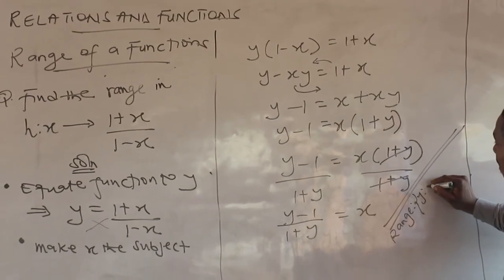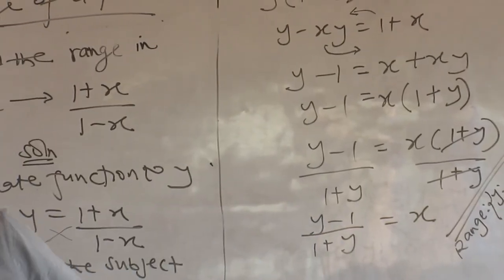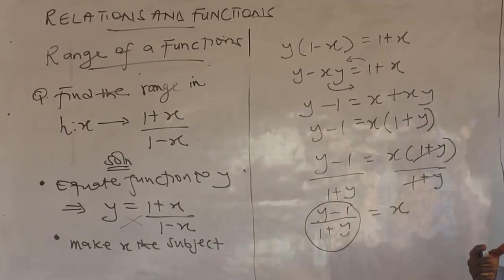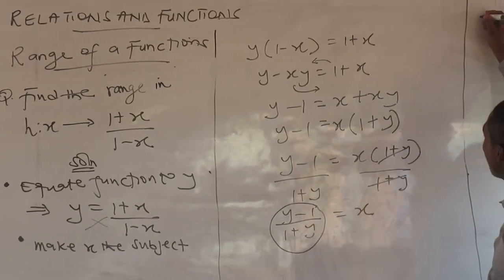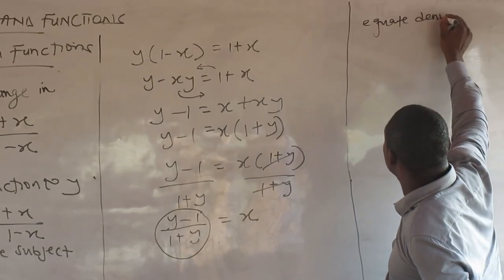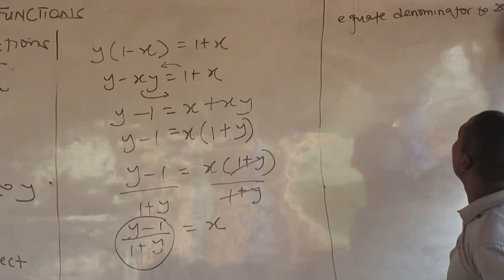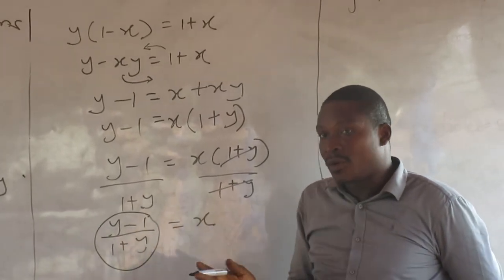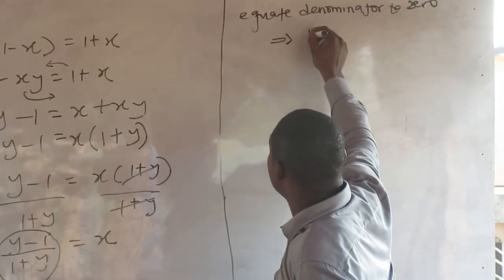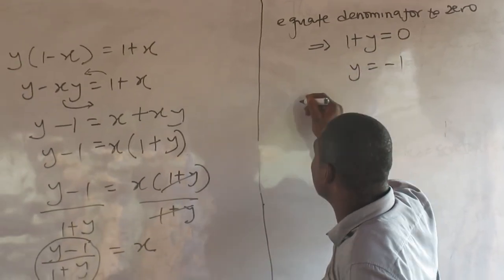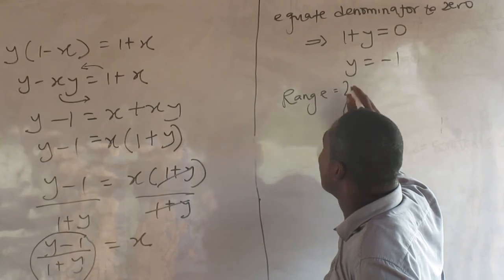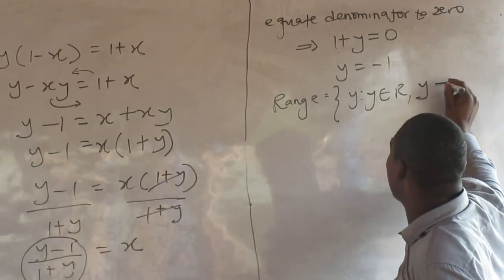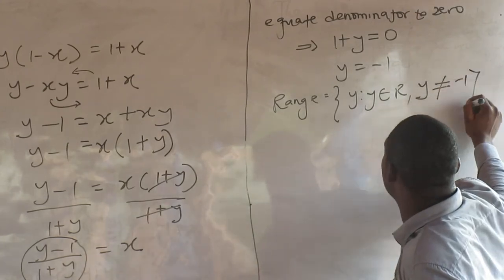It's a rational function, so we have to continue — we equate the denominator to zero. Remember, for rational functions we use the denominator. So one plus y equals zero, giving y equals negative one. The range is: y belongs to all set of real numbers except y should not equal negative one.